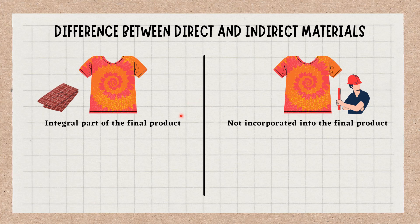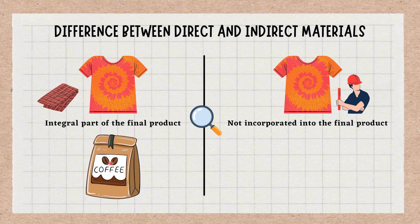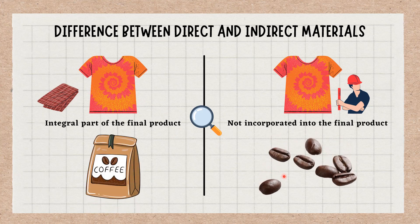Indirect materials may include items such as packaging, labels, glue, and other items that are used in the production process but are not visible in the final product. These items are important to the production process, but they are not considered to be part of the finished product.